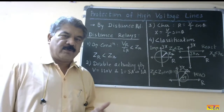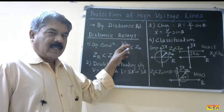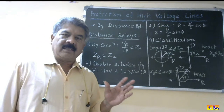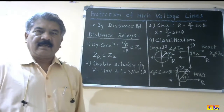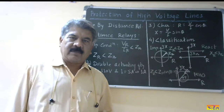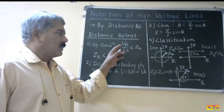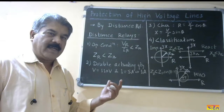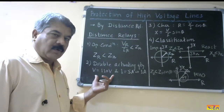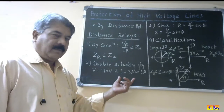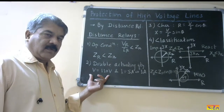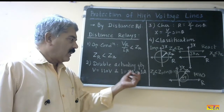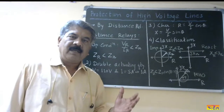The second point is about the actuating quantities. For operation of the distance relays, we require voltage as well as current. Therefore, this is a double actuating quantity relay, whereas an overcurrent relay is a single actuating quantity relay because there we measure only the current. Here we need to measure voltage as well as current. Therefore, if it is an electromagnetic relay, there will be two windings — one is a voltage coil or pressure coil, and the second is a current coil. The standard rating of the voltage coil is 110 volts, and the current coil can be either 5 ampere rated or 1 ampere rated.